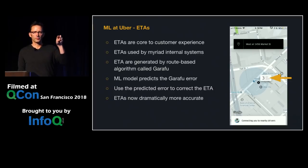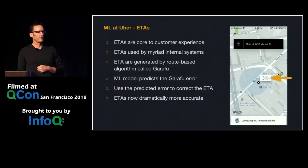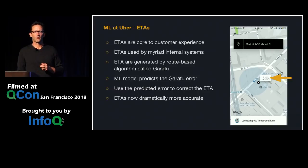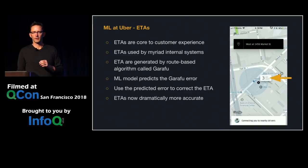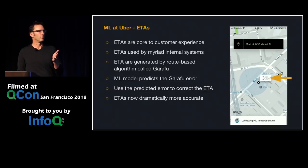Uber has long had a route-based ETA predictor that looks at road segments and averages historical speeds to predict a base ETA. What we found is those ETAs are usually wrong to some degree, but wrong in consistent or predictable ways. So we can fit models to the error and use the prediction to correct the error, giving dramatically more accurate ETAs across the board.